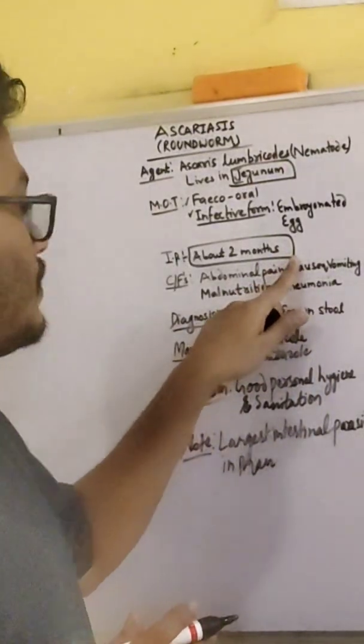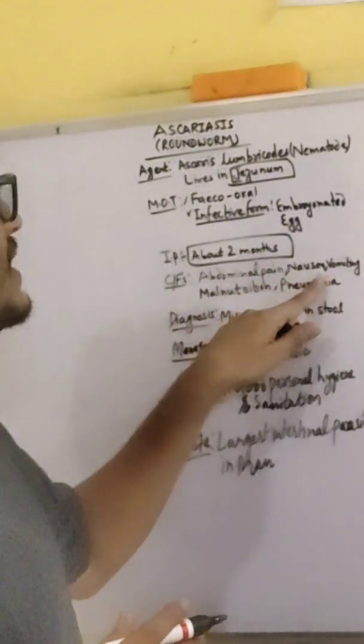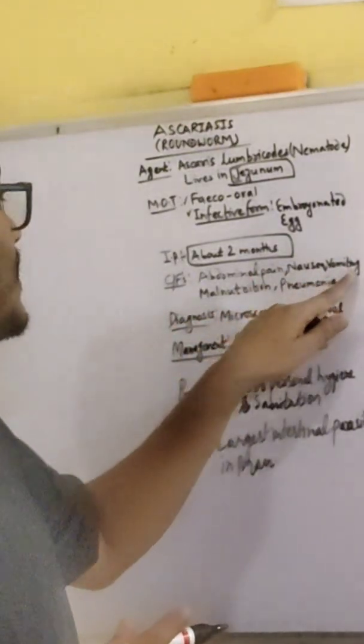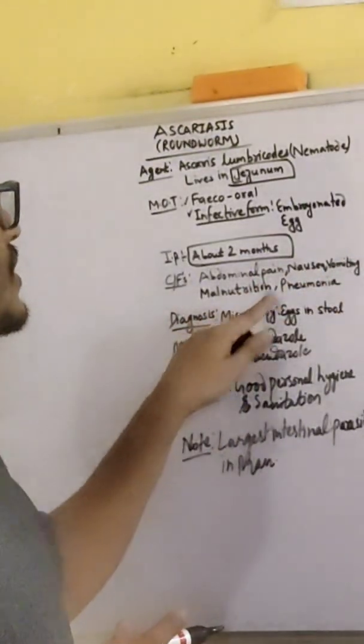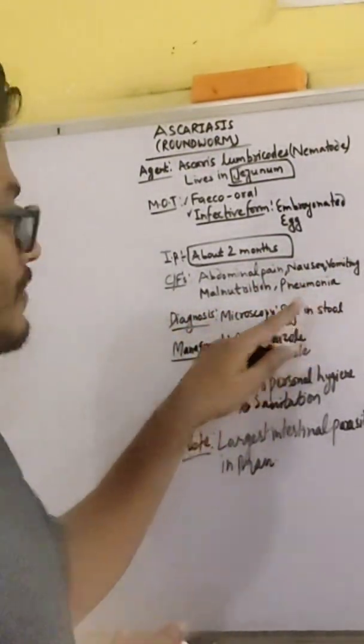The signs and symptoms include abdominal pain, nausea, vomiting, malnutrition, and pneumonia.